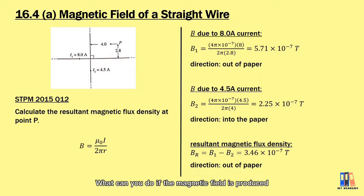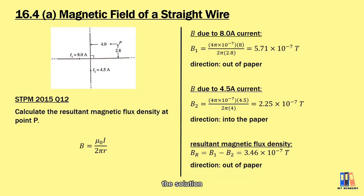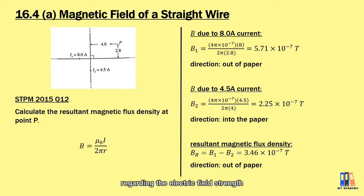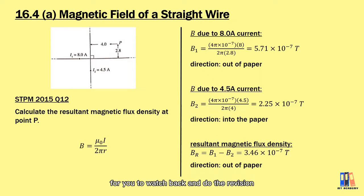If the magnetic fields are produced in different directions, you can refer back to the questions you did previously regarding the electric field strength. I'll put a card here for you to watch back and do revision.